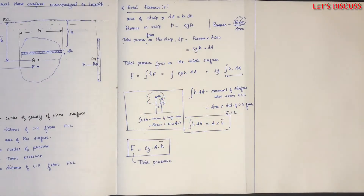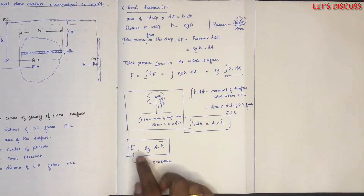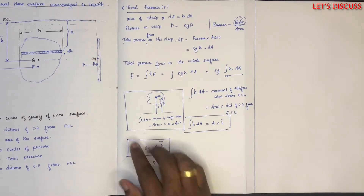The total pressure is derived from the total pressure formula. We have the total pressure F is equal to rho g h-bar.